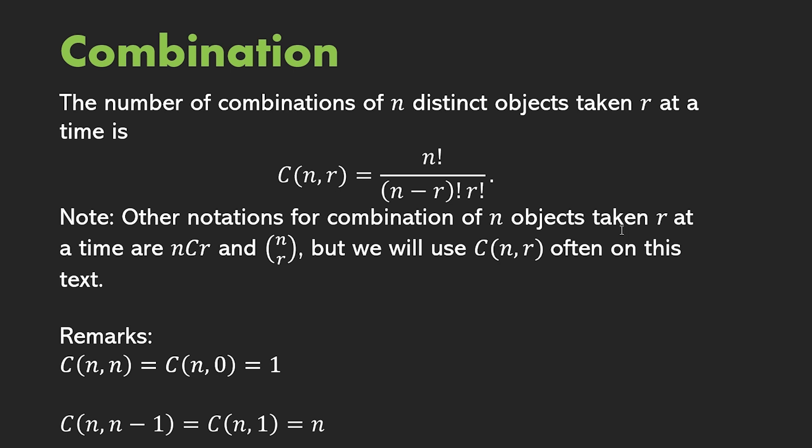Note, the other notations for combination of n objects taken r at a time can be, you can use this one, or you can use, ito yung medyo famous na ginagamit, lalo na sa mga proofs at sa mga books. But, we will use this one because, again, it's easier to type C or the combination of n taken r.